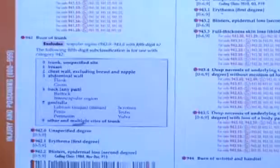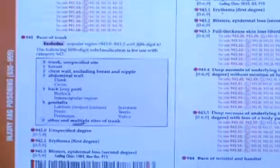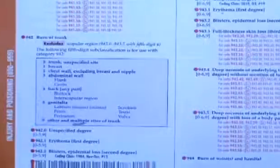So 942, burn of the trunk. So the difference between the categories is location, general location. Now this is the point where I'll ask my students, okay,